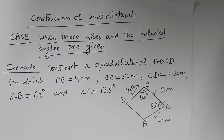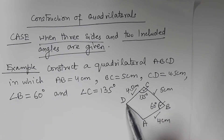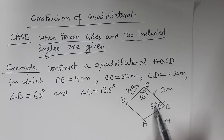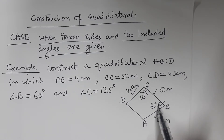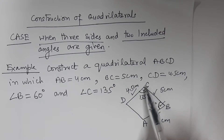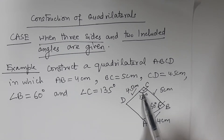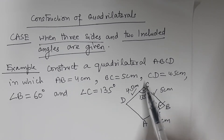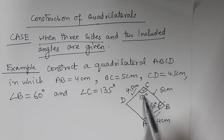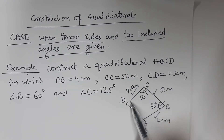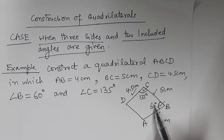You are given three sides AB, BC, CD and two included angles — the included angle between AB and BC, that is angle B, and the included angle between BC and CD, that is angle C. So you are given three sides and two included angles.